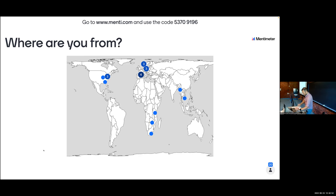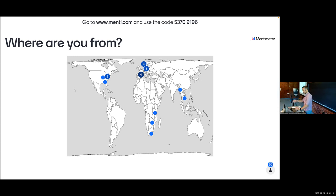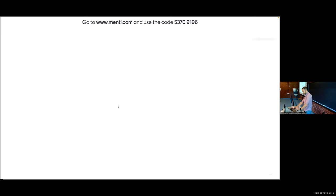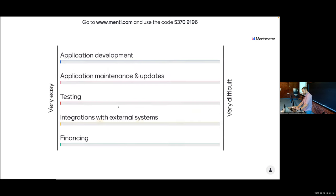Moving to the second question - it looks like we've got some European representation, some African, some Asian, and some US as well. I'd put myself on the west coast of the US originally, then Europe. Let's go to the next question.